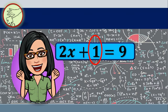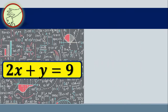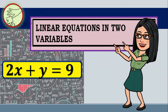If we replace the constant 1 in the given equation with another variable y, the equation becomes 2x plus y is equal to 9. This is an example of a linear equation in two variables. Are you excited to learn more about linear equations in two variables? You'll find out as you go through the lesson. Good luck!